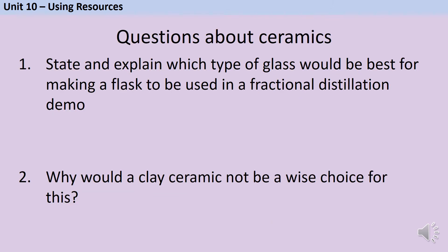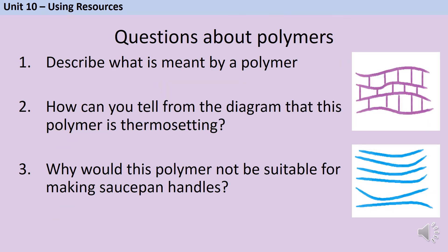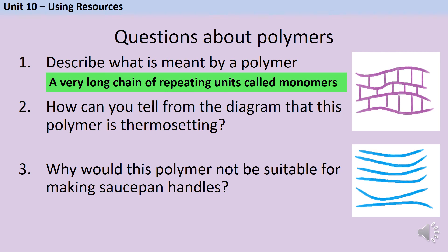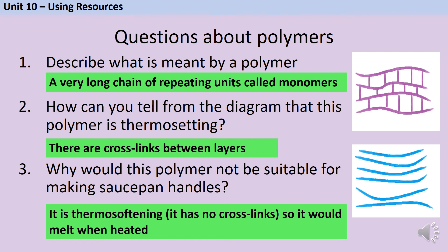Let's finish with some practice questions starting with ceramics — pause the video and write down some answers. For a fractional distillation demonstration, which involves very high temperatures, you'd want borosilicate glass because it has a much higher melting point than soda lime glass and won't melt mid-demonstration. Since everyone watching needs to see what's happening, clay ceramic would be no good because it's opaque. A polymer is a very long chain of repeating units called monomers. The top picture shows a thermosetting polymer because there are crosslinks between the layers. The bottom polymer would be no good for saucepan handles because it is a thermosoftening polymer — it has no crosslinks and so would melt when heated.